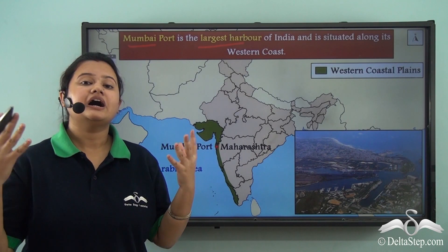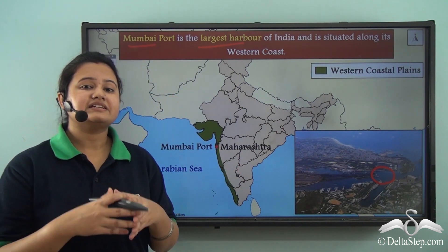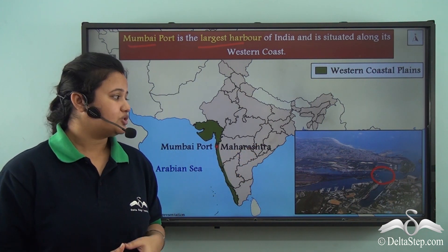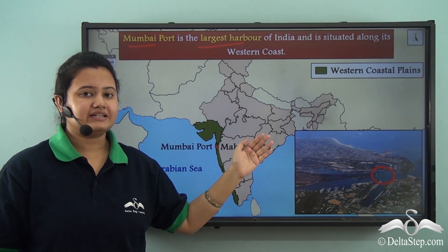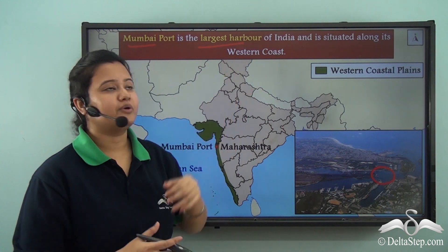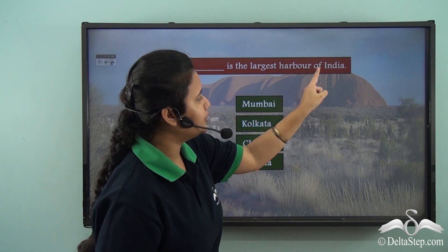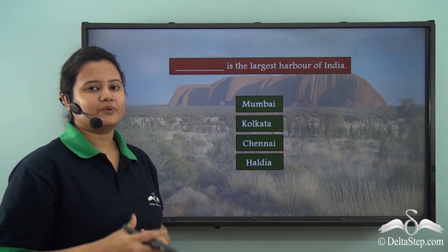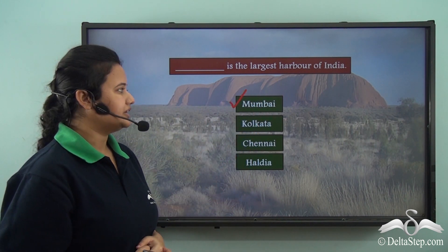Now let me explain what harbours are. A harbour is a partially enclosed area at the base of river mouths. Since this region is semi-enclosed, they can protect the ship from waves, winds, and ocean currents. So, here at the harbours the ship can be safely anchored. When a coastline is highly indented, there we find natural harbours, and one such harbour is Mumbai port — in fact, it is the largest harbour of India. Now, a quick question: which is the largest harbour of India? The options are Mumbai, Kolkata, Chennai, and Haldia. We just read that Mumbai is the largest harbour of India, so the correct option is Mumbai.